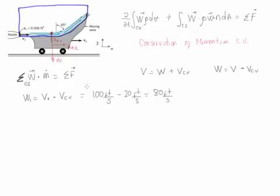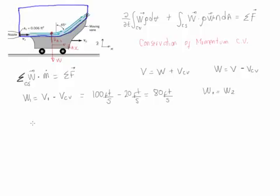To determine w2, we need the fluid velocity at the exit. By conservation of mass and since we maintain the same cross-sectional area throughout the flow, the velocity v1 equals the velocity v2. Performing the same calculation, w1 equals w2, and that is equal to 80 feet per second. Note that this is the magnitude of the velocity; since we have components, we will find those for each axis.